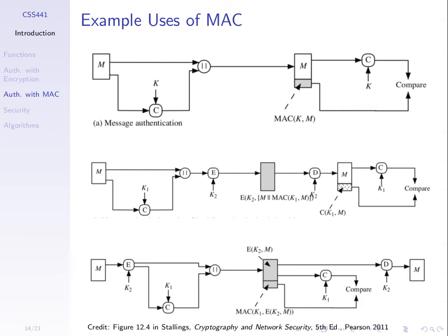A MAC function takes as input a message and a key. We apply a function on that message using a secret key — not an encryption key, but a MAC key. That function produces a fixed-length, random-looking output. The required properties are: if we take two different messages in, it produces two different outputs. If we change M even using the same key, the output MAC will be different. If we change the key using the same message, the output MAC will also be different.